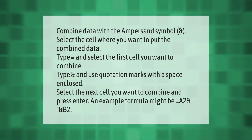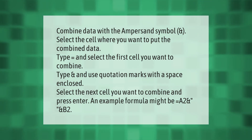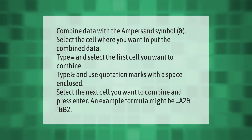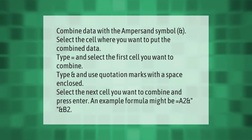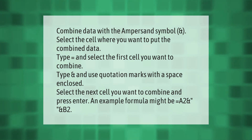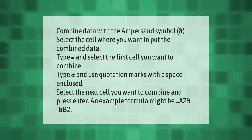To combine data using the ampersand symbol, select the cell where you want to put the combined data. Type equals and select the first cell you want to combine. Type an ampersand and use quotation marks with a space enclosed, then select the next cell you want to combine and press Enter. An example formula might be: =A2&" "&B2.